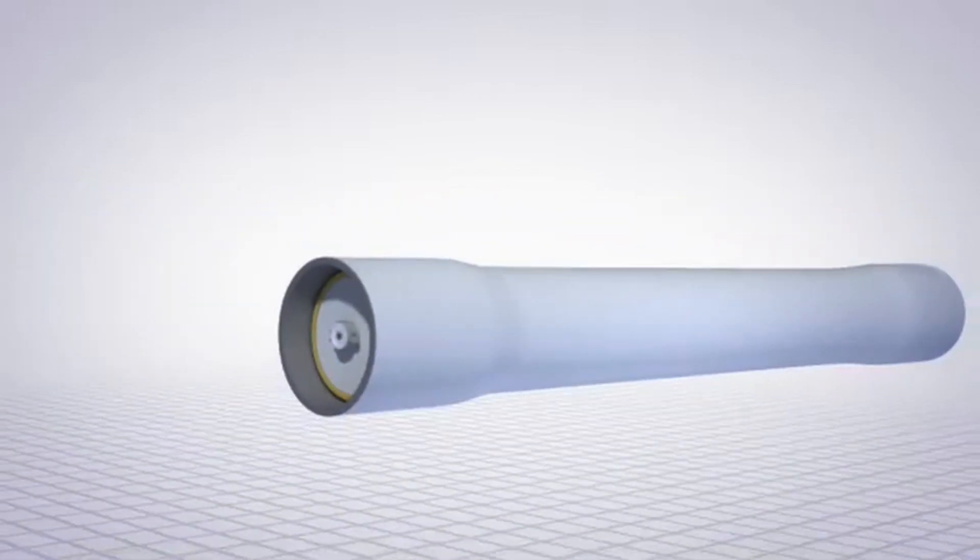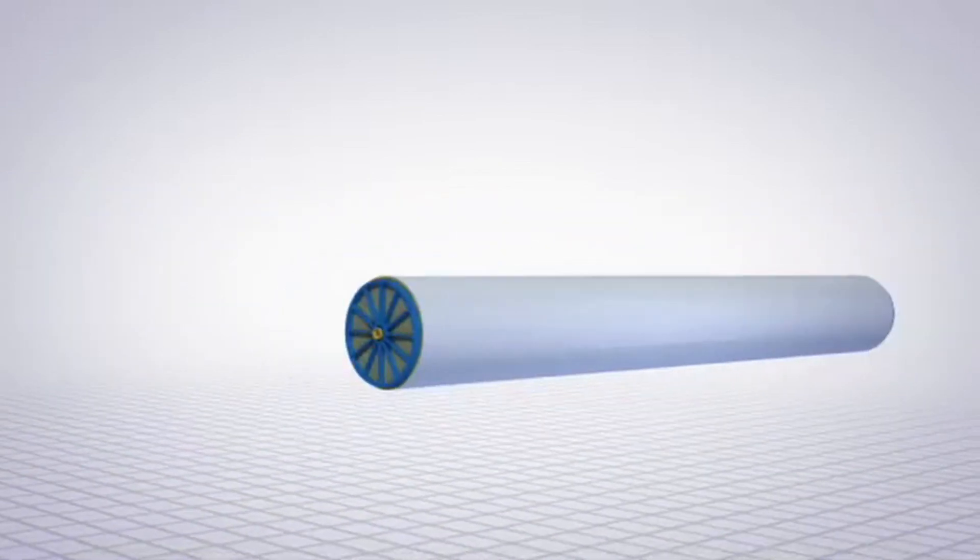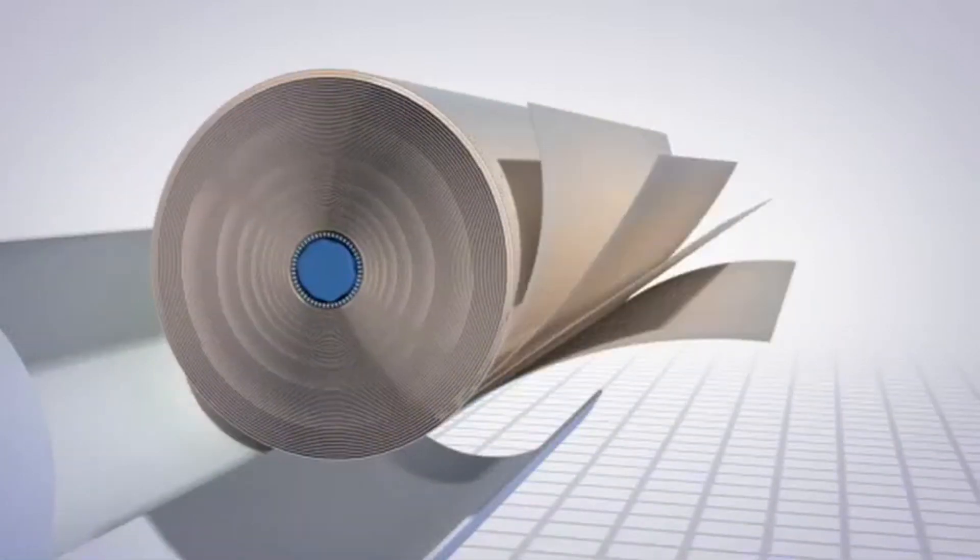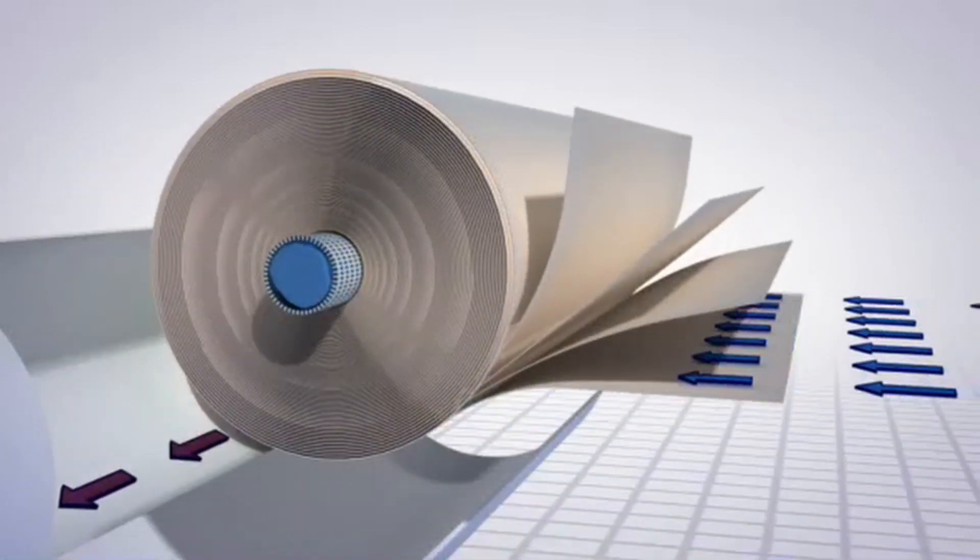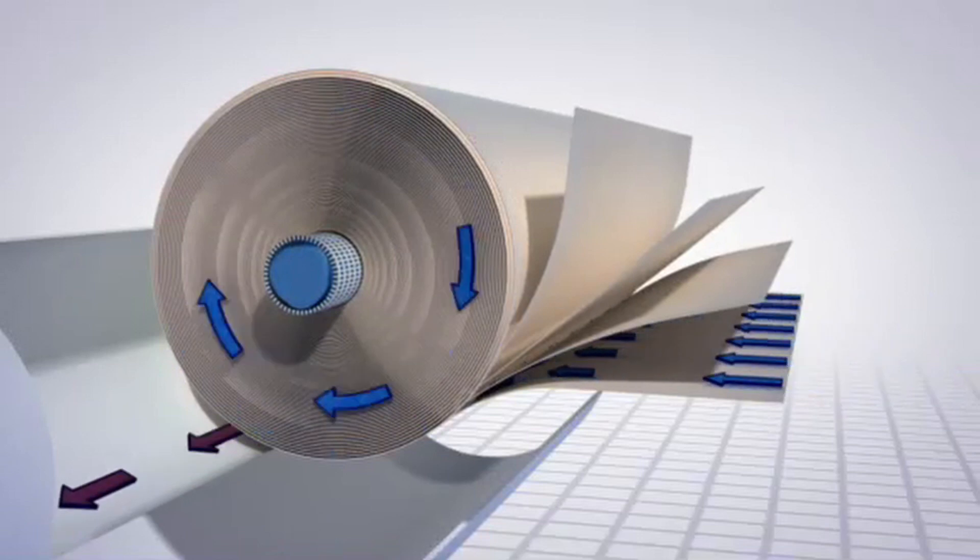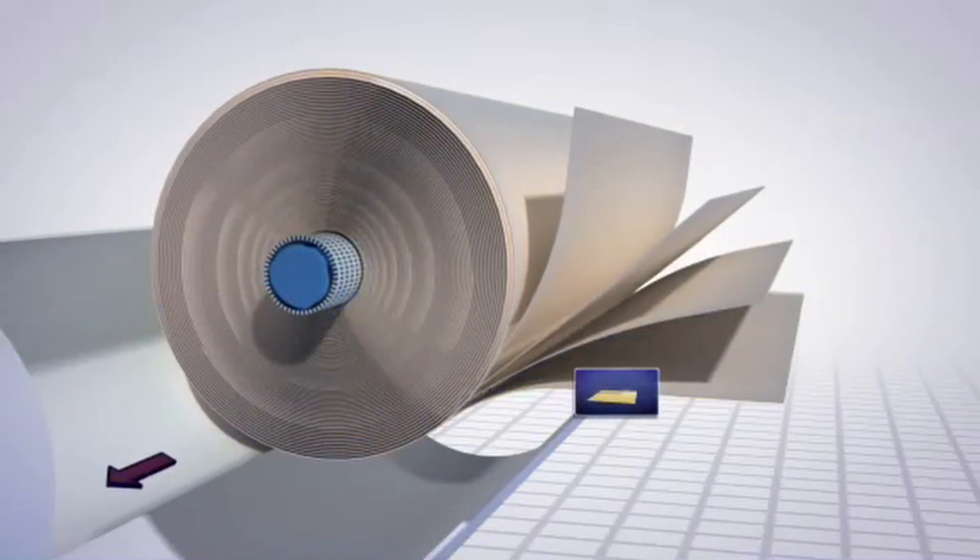Rolls of membrane sheets are wound into cylinder-shaped elements. There are several elements inside each long pressure vessel. As water enters the vessel it flows over the membrane surface as it moves from one end of the vessel to the other.